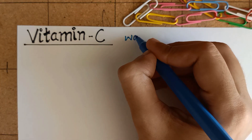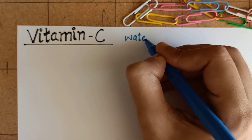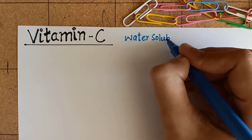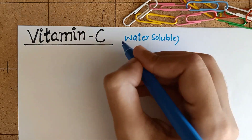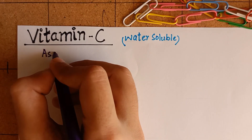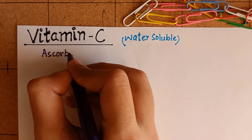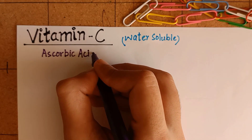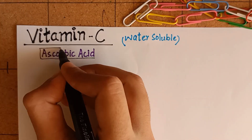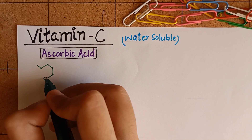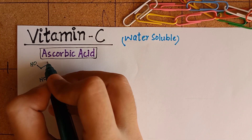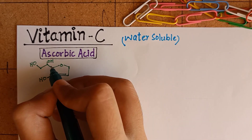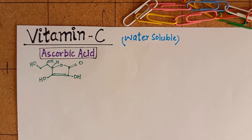We are going to learn about vitamin C, which is a water-soluble vitamin. Its active form is called ascorbic acid. Ascorbic acid is a 6-carbon molecule which resembles a monosaccharide in structure.